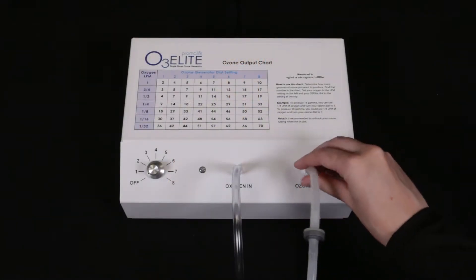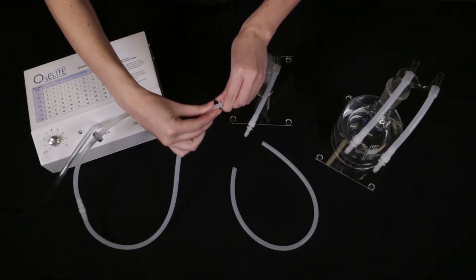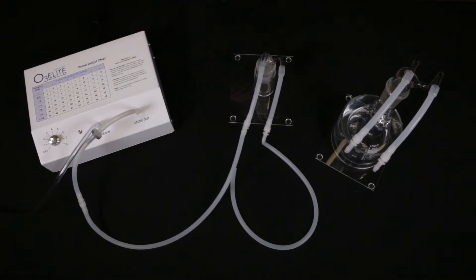First, attach your tubing with the check valve to the ozone outport of your ozone generator. You will then attach the tubing from the ozone outport on your ozone generator to the ozone in straw of the trap. This is the straw that goes all the way into the jar.